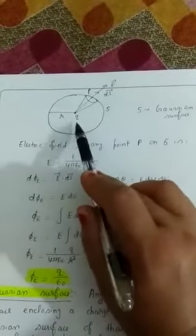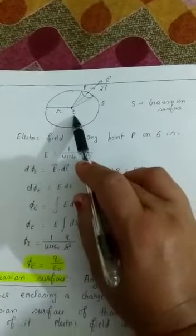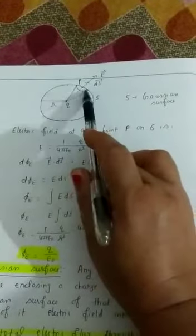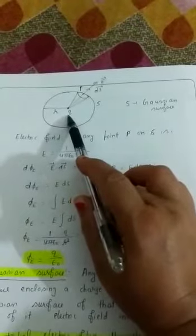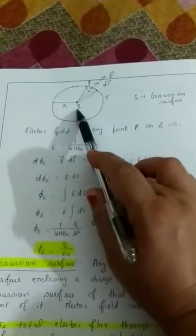We will take one charge. Let we have one charge at the center. This charge is Q. This is the surface, we call it Gaussian surface. For a point charge, it is spherical. For a line charge, it is cylindrical.